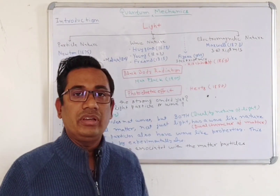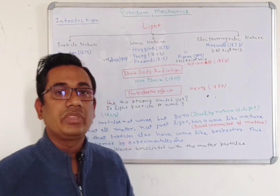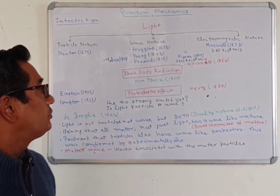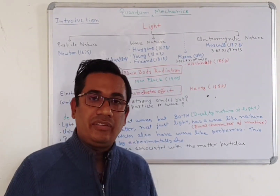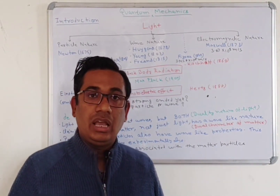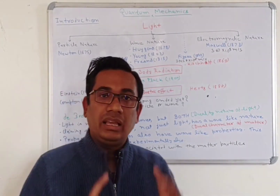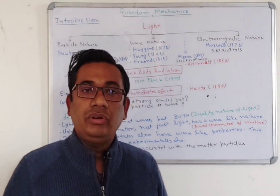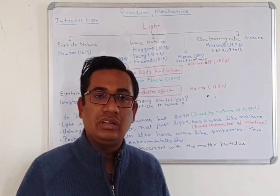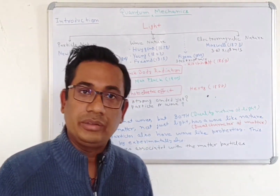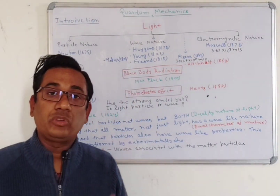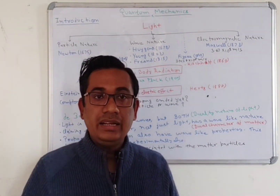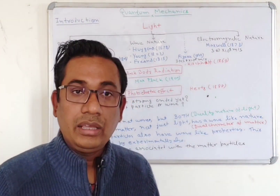Now, the wave nature of light was first proposed by Huygens in 1678. According to Huygens' theory, he explained the law of reflection and double refraction. He also explained that the velocity of light in a denser medium is less than in a rarer medium. Huygens' theory predicted interference and diffraction, but he could not give strong evidence for this. He also failed to explain the velocity of light traveling in a vacuum and the exact nature of light as longitudinal or transverse.